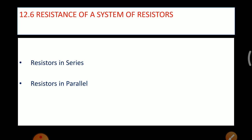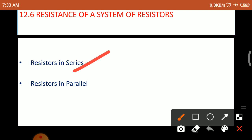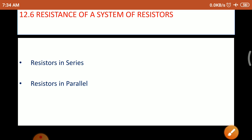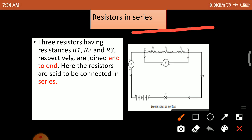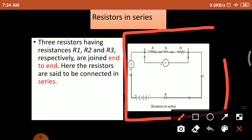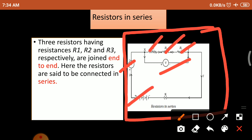The next topic is resistance of a system of resistors. There are two systems: resistors in series and resistors in parallel. For resistors in series, look at this electric circuit diagram. This circuit contains three resistors, one voltmeter, one ammeter, battery, and key.